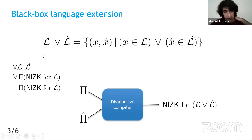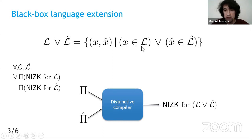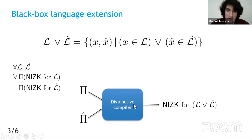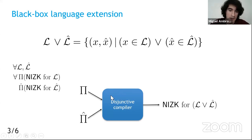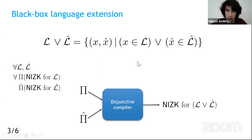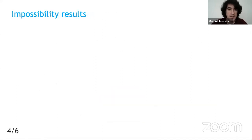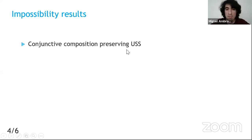The disjunction extension is the language of pairs where either the first word is in language L_1 or the second in L_2. A black-box compiler for this takes any two NIZKs for those languages and builds a NIZK for the extension, calling underlying functions in a black-box way without caring about their implementation. We prove that conjunctive extension is impossible under the full verification model if you want to preserve unbounded simulation soundness.